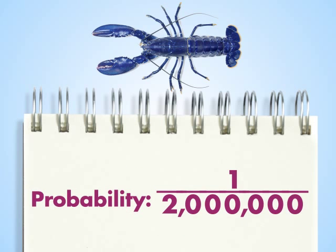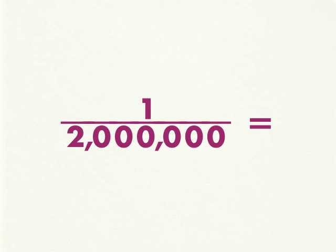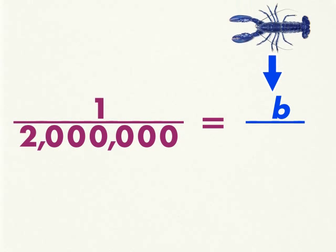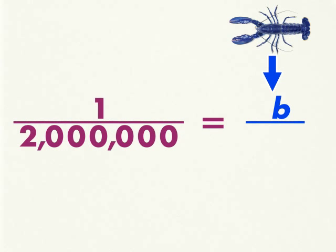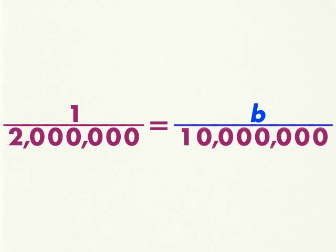To make your prediction, you can set up a proportion. Start with the probability of a blue lobster birth as a fraction: 1 over 2 million. Now set up the equivalent fraction. For the numerator, use the variable b to represent the number of lobsters likely to be born blue. The denominator is 10 million, because that is the total number of lobster births that you will base your prediction on.